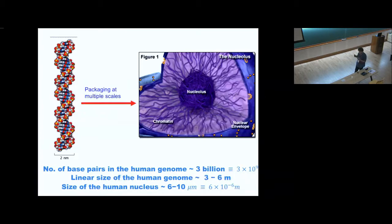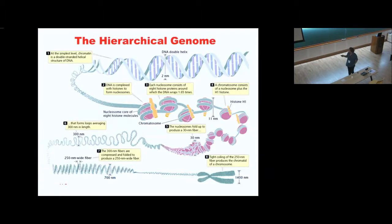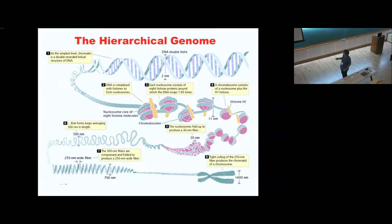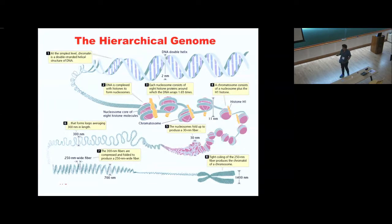First I'll briefly run through what is known experimentally about this organization. There is a hierarchical folding: starting from the DNA double helix, the DNA wraps around histone proteins — these pink balls — forming a structure called the nucleosome. These nucleosomes further coil and wrap to form what is called a 30 nanometer fiber, which then folds into higher-order structures giving you the chromosome. This picture of chromosomes is only true when the cell is dividing; in general it's a blobby mess.